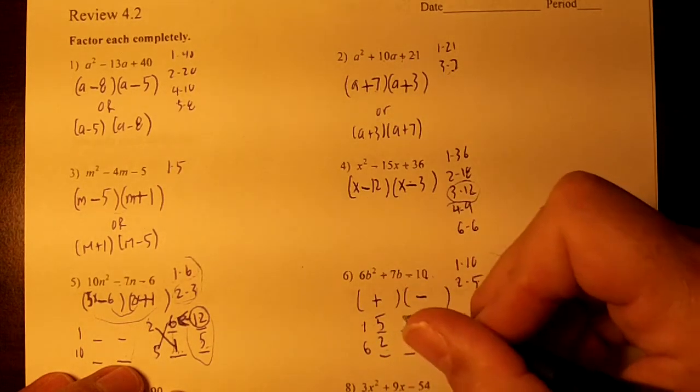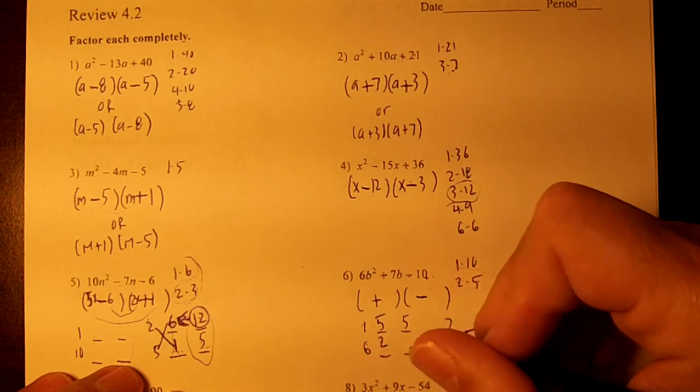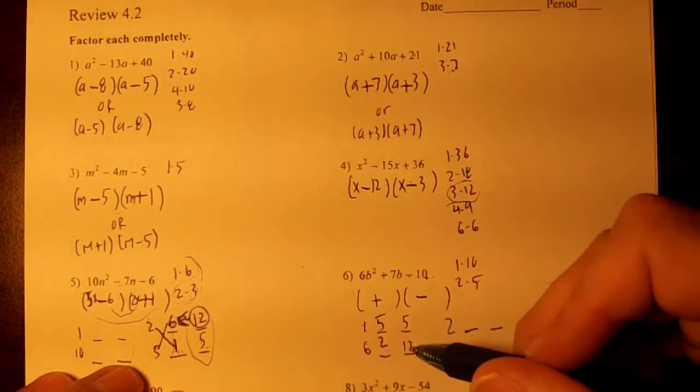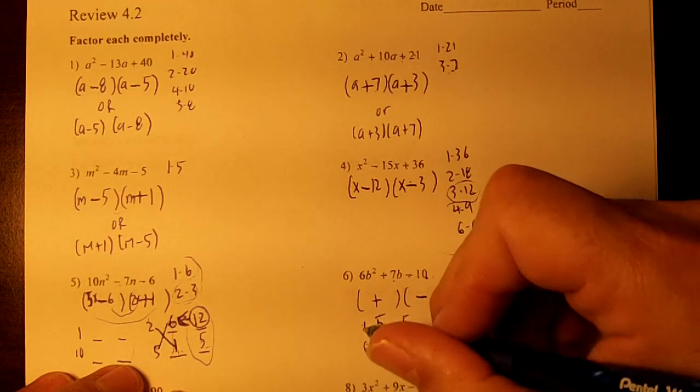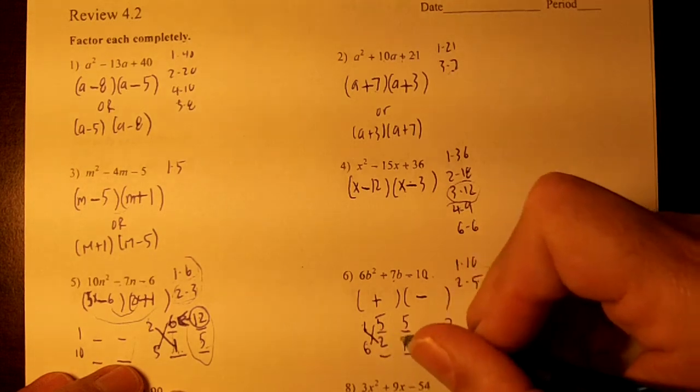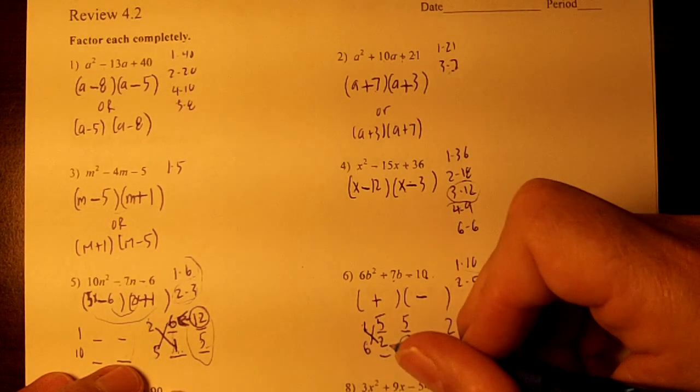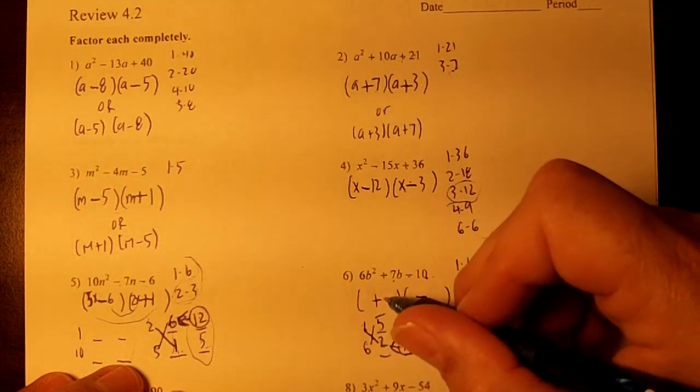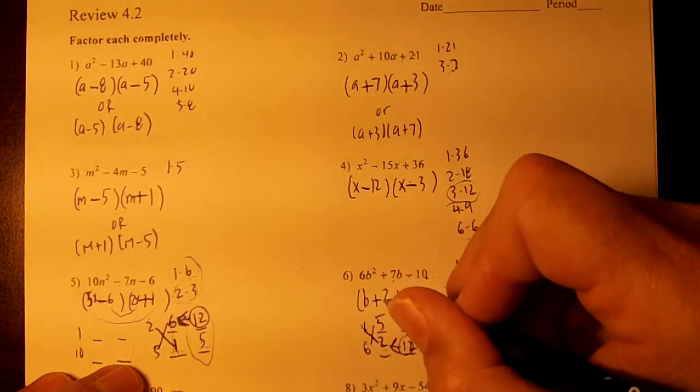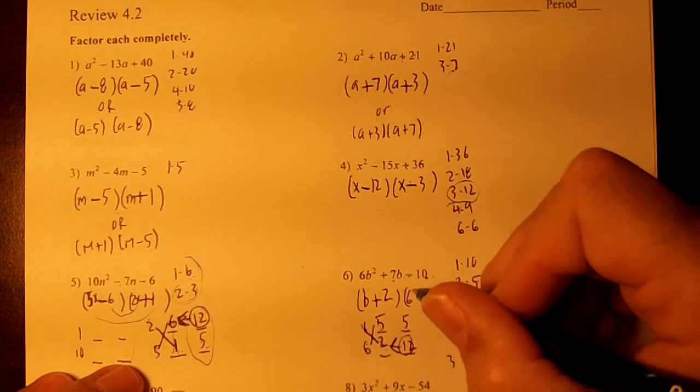What's 1 times 5? It's 5. And what's 6 times 2? It's 12. So 12 minus 5 is our 7. Draw an X, circle the biggest one, and put an arrow to the left. That 2 goes right here. So the 2 and the b go here, and the 6b and the 5 go here.